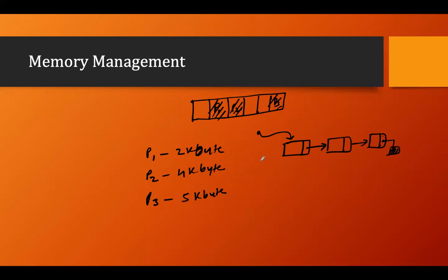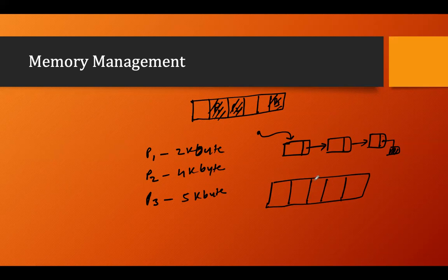In non-contiguous allocation, one part of the program is stored in one place and another part in another place. The available portion of memory is called a hole, and we search for these holes. Let's say we have some memory already occupied — 10KB here and 2KB already occupied elsewhere.